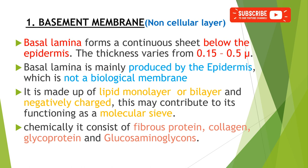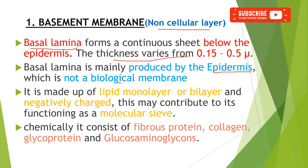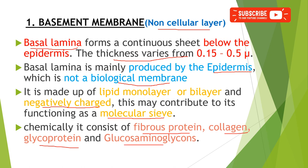The first layer is the basement membrane, also called the basal lamina, which is a non-cellular layer. It forms a continuous sheet below the epidermis, with a thickness varying from 0.15 to 0.5 micrometers. This basement membrane is produced by the epidermal cells and is a non-biological membrane mainly consisting of a lipid monolayer or bilayer that is negatively charged. Its main function is to act as a molecular sieve. Chemically, it consists of fibrous protein, collagen, glycoprotein, and glucosaminoglycans.